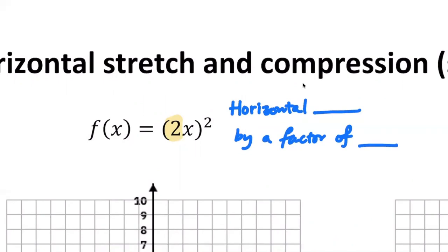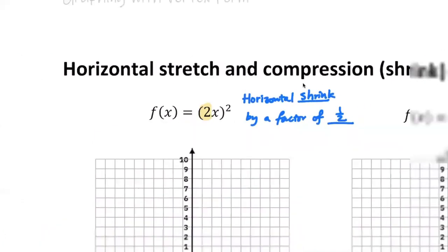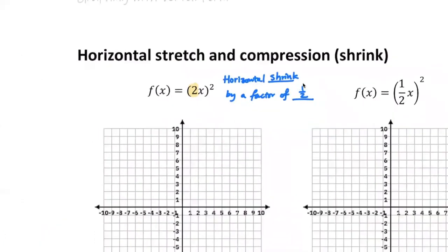...shrink or compression by a factor of one half. I know it's a shrink because it's by a factor of one half. That's something a lot of people missed in the absolute value unit, so now it's a good time to redeem yourself if you were one of the students who tended to miss those questions.